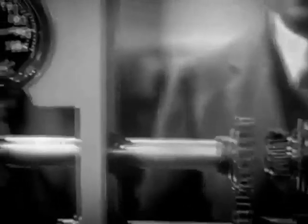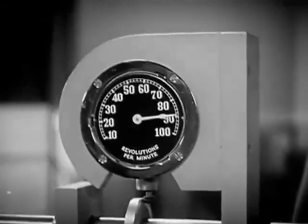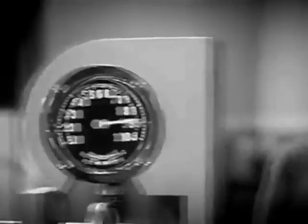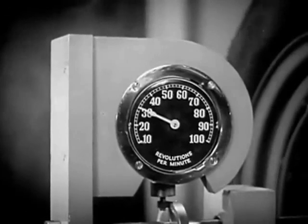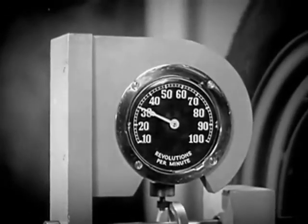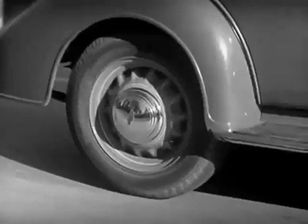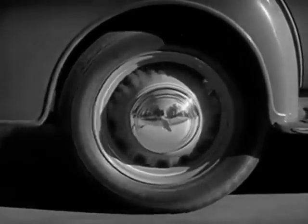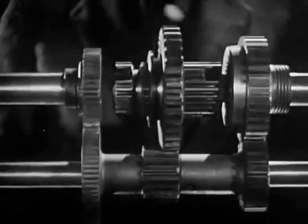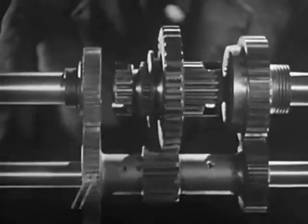The engine on this model is running at a constant speed of 90 revolutions a minute. With low gears in mesh, the rear wheel is turning at 30 revolutions a minute, about a third the speed of the engine, but with three times the force. The power is going through these gears in the transmission.